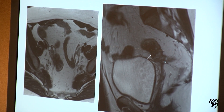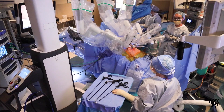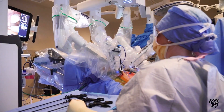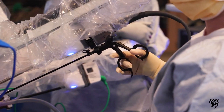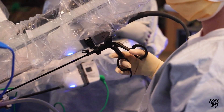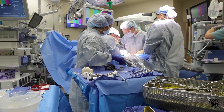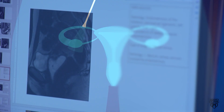Although it can sometimes be seen on imaging, superficial disease requires laparoscopic surgery for definitive diagnosis. If the endometriosis is growing into organs in the pelvis or abdomen, that's called deep disease, and surgery may not be needed for diagnosis.